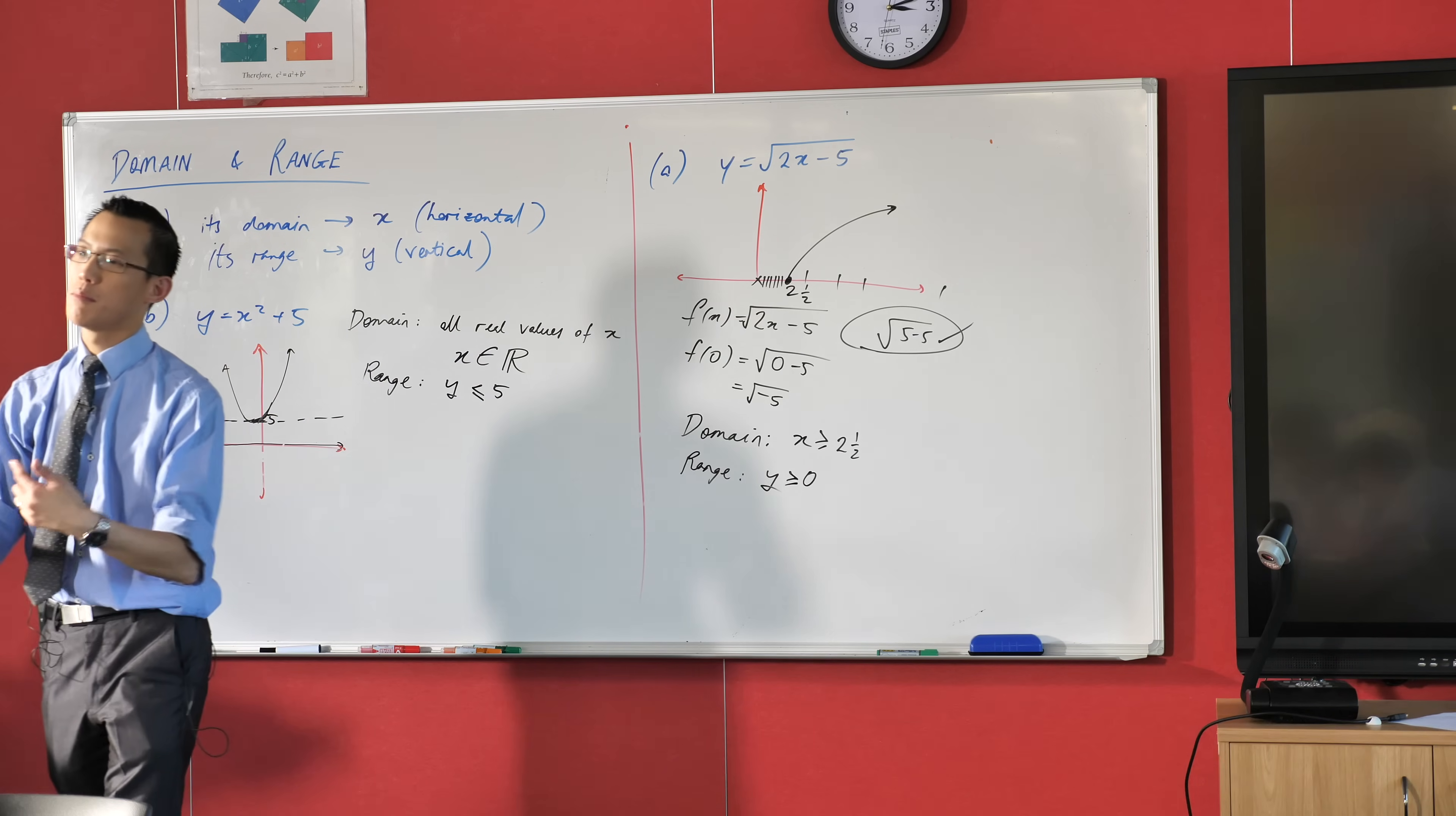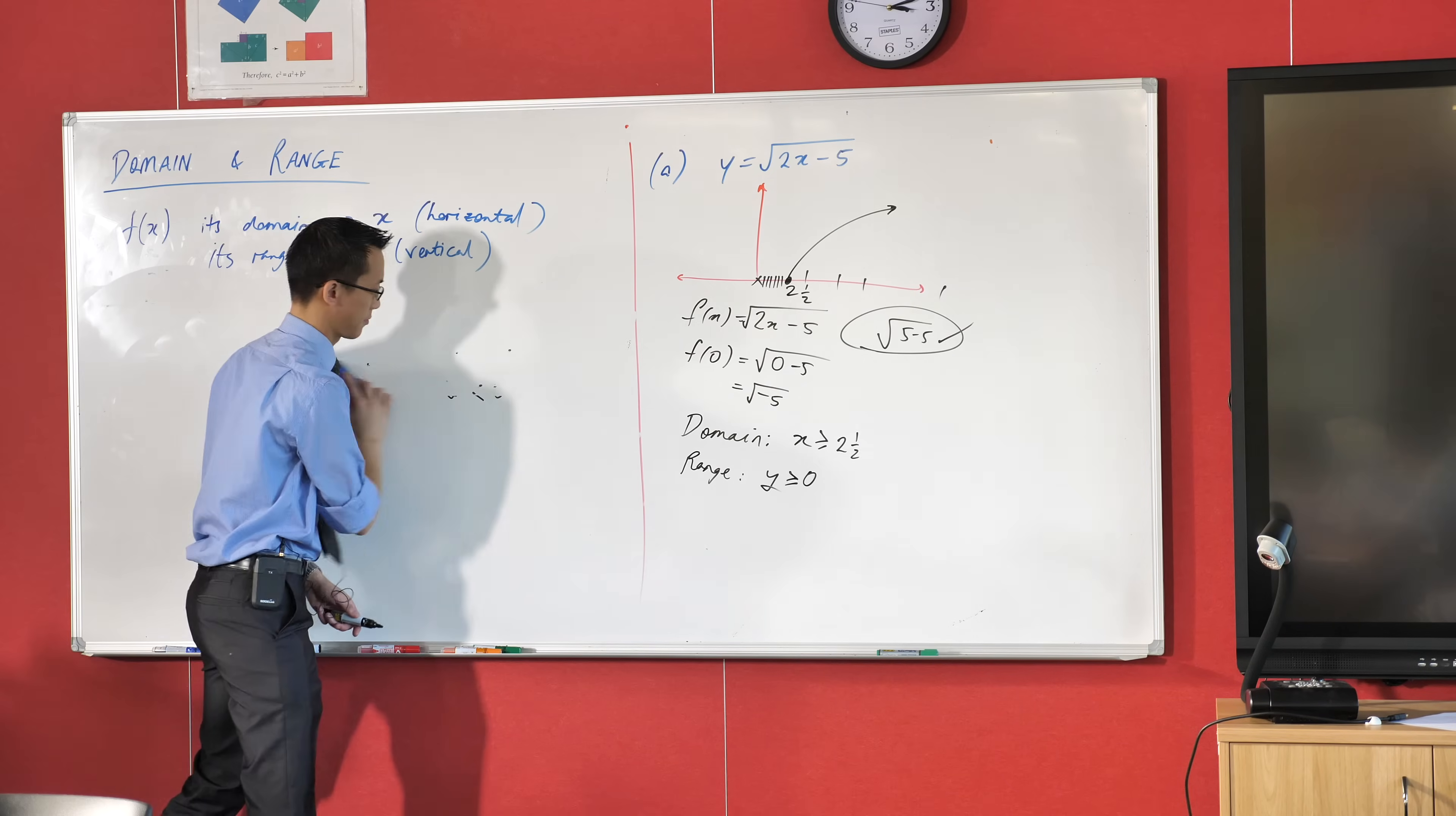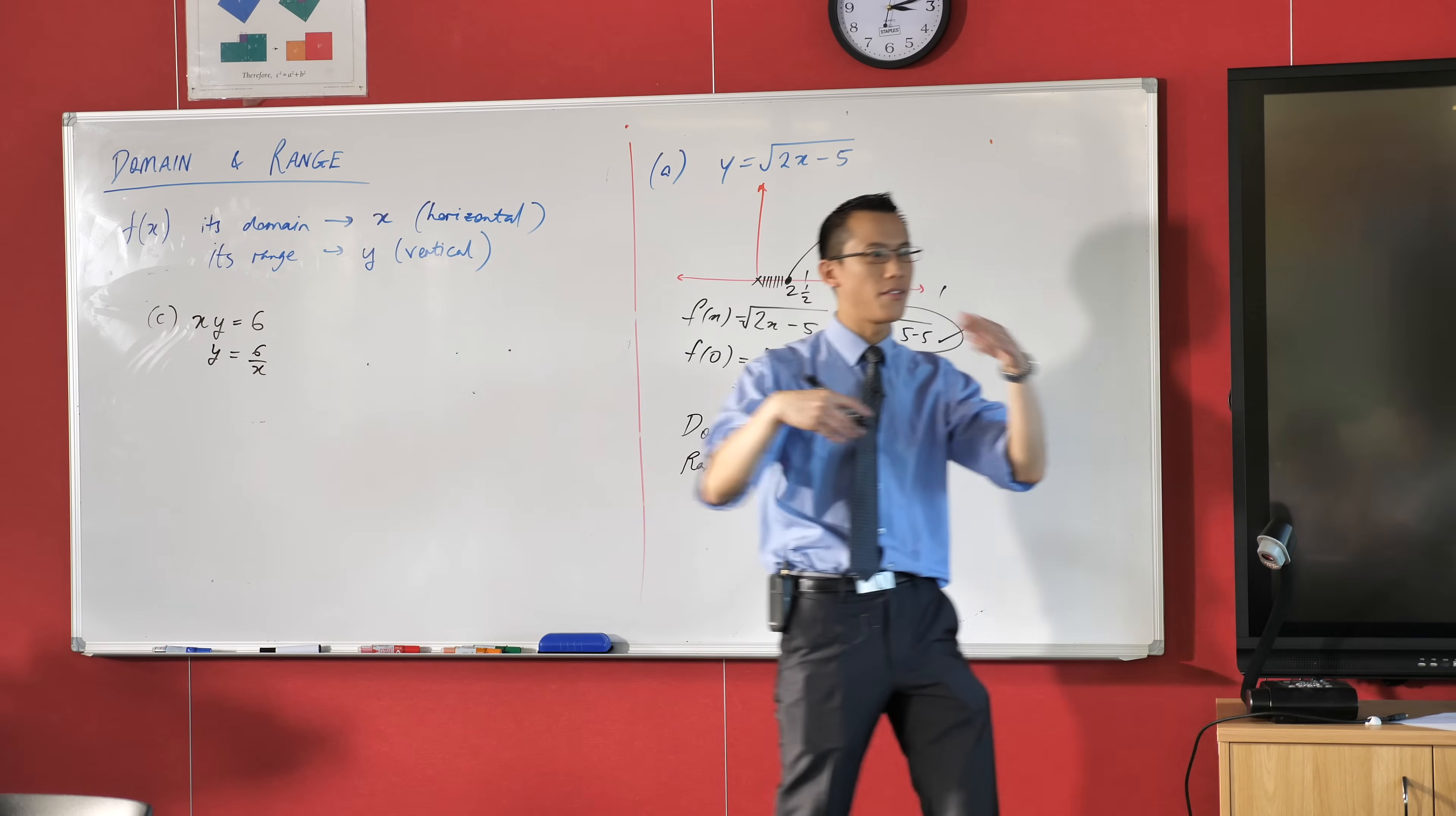Now this starts to get more tricky when you look at these other ones. I think from memory you've got one that says xy equals 6. Has anyone put it into Desmos yet? If you haven't already, please put in xy equals 6. Does anyone remember the name of this shape?